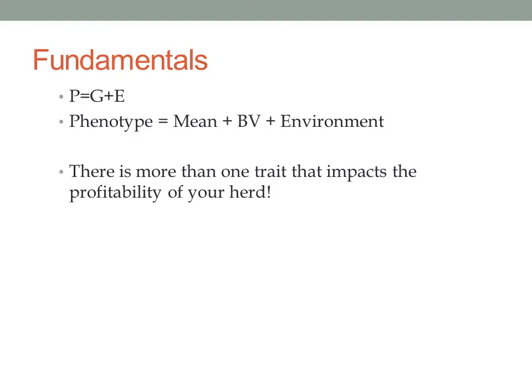Now, the crux is that there are more than one trait that impacts the profitability of your herd. It's not just increased weaning weight that drives your bottom line — it could be a culmination of a lot of traits. As we look through sire summaries, bull sale catalogs, or AI catalogs, it's apparent that there's a multitude of EPDs for a multitude of traits. So how do you really narrow down what's important to you and make sense of all the information you're given?